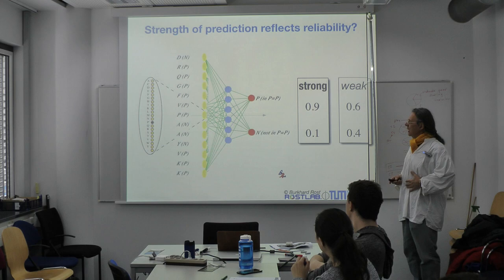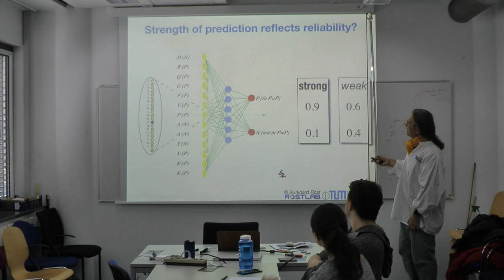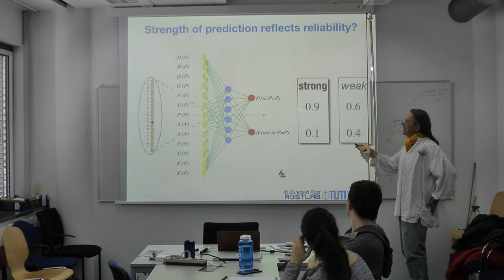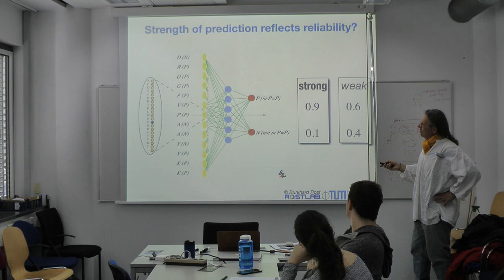We dial through this curve by essentially dialing from strong to weak. Both of these predictions have the unit predicting a protein-protein interaction — this one is strong, this one is weak. In this curve, we simply dial through this threshold.